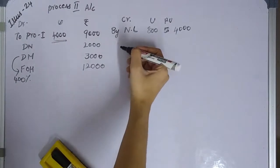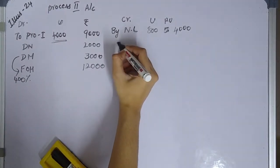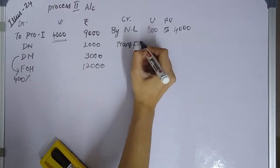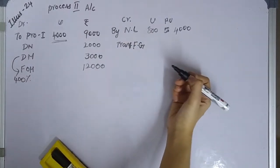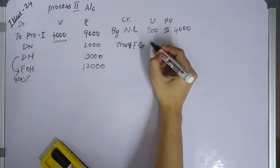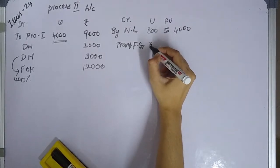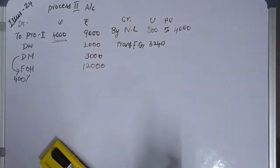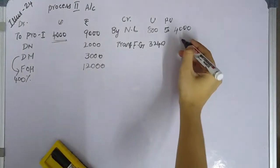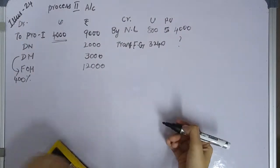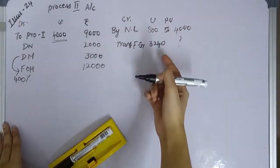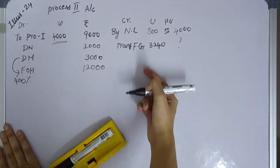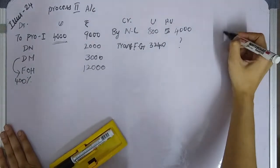Next, transfer to finished goods. We have 3,240 units multiplied by the per unit cost. We need to determine the per unit cost using the short formula.